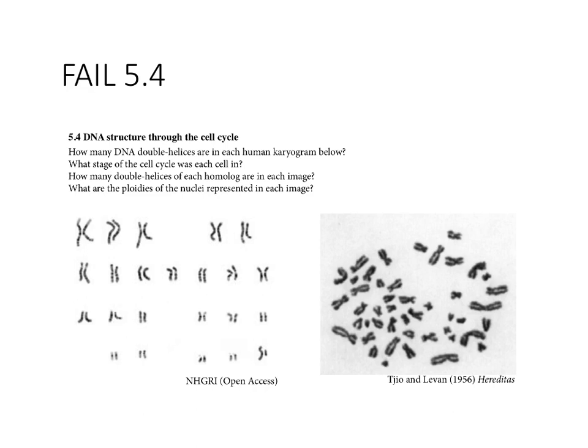When we ended last time, we were talking about chromosomes and why two pictures of chromosomes are basically the same even though the structures look different. There are the same number of double helices in both pictures — the karyogram and the metaphase chromosome spread. Different cells, just rearranged differently, but both are human normal diploid cells.